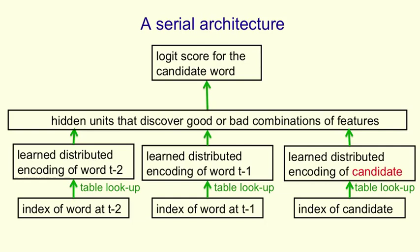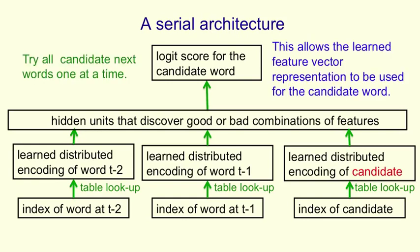The inputs from the context to that big hidden layer are the same for every different candidate word. The only bit we need to run for each candidate word is the inputs coming from the candidate word and the final output to the score, and that doesn't have many weights in it. So we try all the candidate words one at a time. By putting in the word as a candidate at the bottom, we're able to use the learned feature vector for that candidate word that we learned when it was a context word.